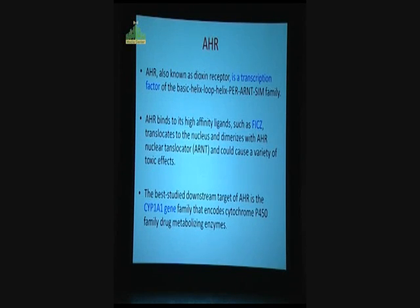What about AHR? It's also known as dioxin receptor. It's a transcriptional factor of the basic helix-loop-helix PER-ARNT-SIM family. AHR binds to its high-affinity ligands such as FICZ, translocates to the nucleus and dimerizes with ARNT, nuclear translocator, and could cause a variety of toxic effects. That's been known for a long time. The best studied downstream target of AHR is the CYP1A1 gene family that encodes a cytochrome P450 family drug metabolism enzyme. All these are classical known AHR characteristics.